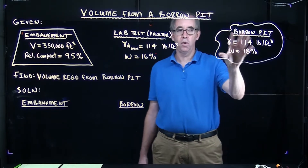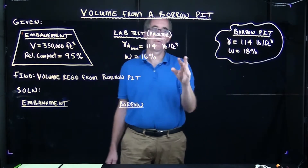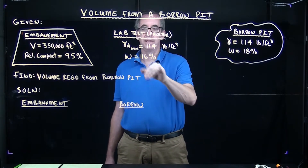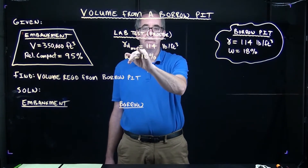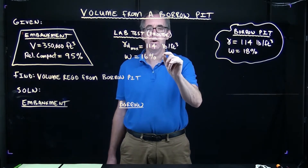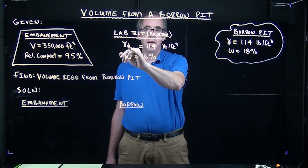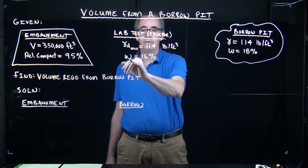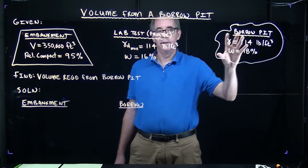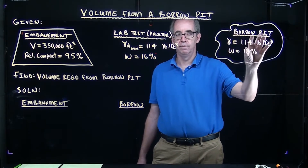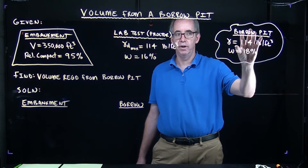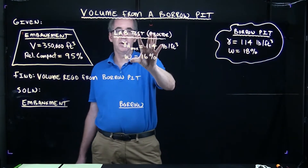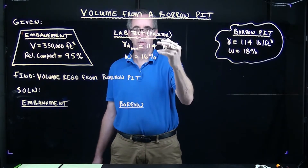That's in the natural state. When they took the soil to the laboratory and performed a standard Proctor on the soil, the lab determined that the maximum dry unit weight — when they plot the curve and get the peak point — is 114 pounds per cubic foot with an optimum moisture of 16%. These are the properties of the soil as-is, with its moist unit weight of 114 pcf and moisture content of 18%, along with the standard Proctor results giving the maximum dry unit weight at optimum moisture.